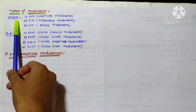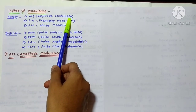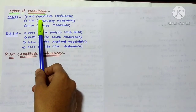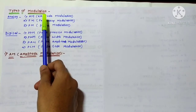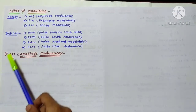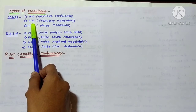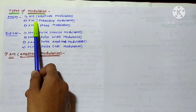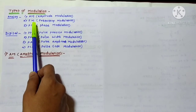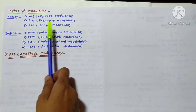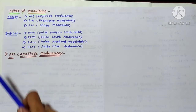In analog modulation, the first type is amplitude modulation, where the amplitude of the electromagnetic wave changes and the other two characteristics — frequency and phase — remain constant. The second type is frequency modulation, where only the frequency of the carrier changes while amplitude and phase are constant. The third type is phase modulation, where only the phase changes while amplitude and frequency remain constant.